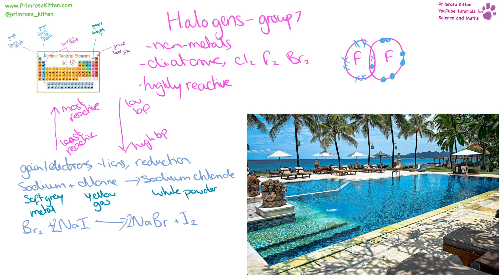A more reactive element will displace a less reactive element. So here we have sodium iodide reacting with bromine. Iodine is below bromine on the periodic table, so bromine is more reactive — it will displace iodine in the compound, forming sodium bromide and iodine. Whereas if you try to react bromine gas with sodium chloride, chlorine is higher than bromine so it's more reactive, and you get no reaction because bromine cannot displace chlorine. These are commonly known as displacement reactions.